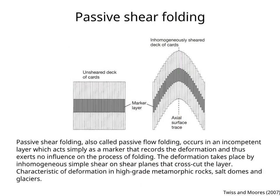Now, let's talk about a mechanism that produces class 2 folds. Passive shear folding, also called passive flow folding, occurs in an incompetent layer which acts simply as a marker that records the deformation,